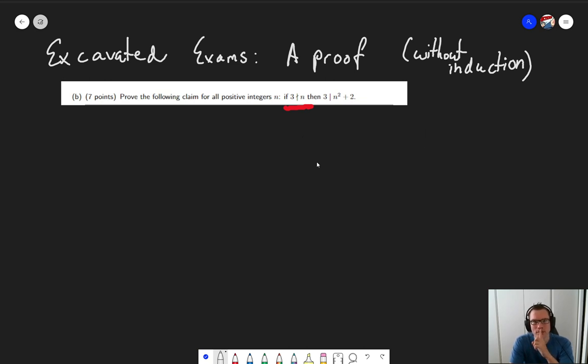Fortunately, there is one more method that you know about. And that one I think is great here. It is the idea of using a proof by division into cases. Because what do I know? Well, if 3 does not divide n, then that means there's two options.